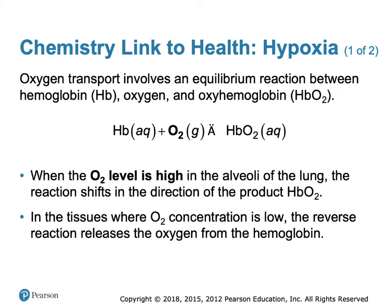This can be linked to the transport of oxygen in the body. Oxygen transport involves an equilibrium reaction between hemoglobin and oxygen and oxyhemoglobin. The reactants are aqueous hemoglobin and dissolved oxygen; the product is oxyhemoglobin. When oxygen levels are high in the lungs, the reaction shifts in the direction of oxyhemoglobin, allowing hemoglobin to bind oxygen. In the tissues where oxygen concentration is low, the reverse reaction releases the oxygen from hemoglobin. If you have active tissue deficient in oxygen, you are essentially removing a reactant, which shifts the equilibrium so that oxyhemoglobin releases its oxygen to form oxygen and hemoglobin, thereby delivering oxygen to the tissues.